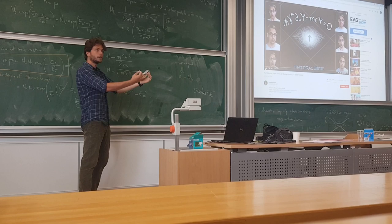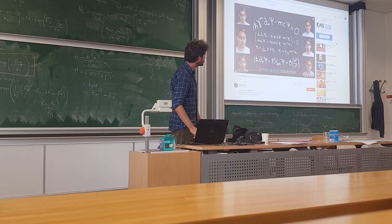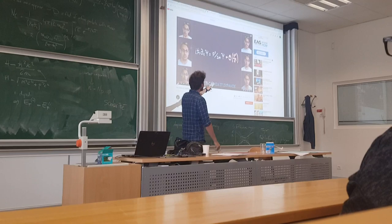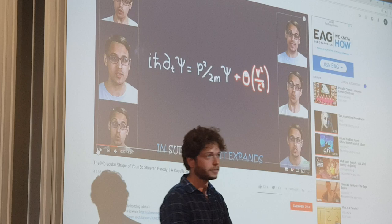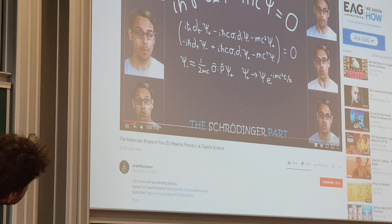But now if you look at speeds which are much lower than the speed of light, what you get is the Schrödinger equation — actually, this is the Schrödinger equation for a free particle. This is the Dirac equation.